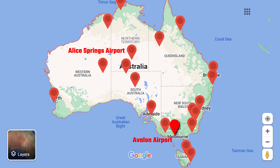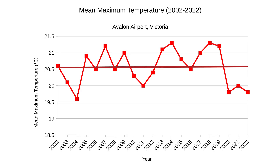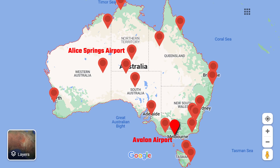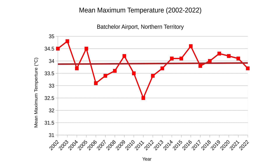At the end of this presentation, I'll find the average of all data across Australia and see how that trends. Next, let's look at Avalon International Airport outside of Melbourne — on average, the maximum temperatures have barely changed over the last 20 years, perhaps a very slight increase. Next, let's look at Batchelor Airport south of Darwin in the Northern Territory. Looking at the graph, I'm noticing a slight increase in temperature over the last 20 years.